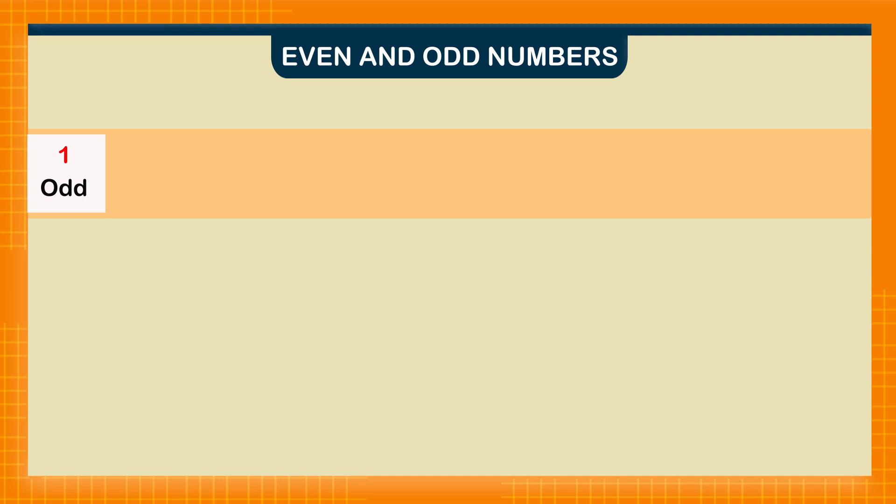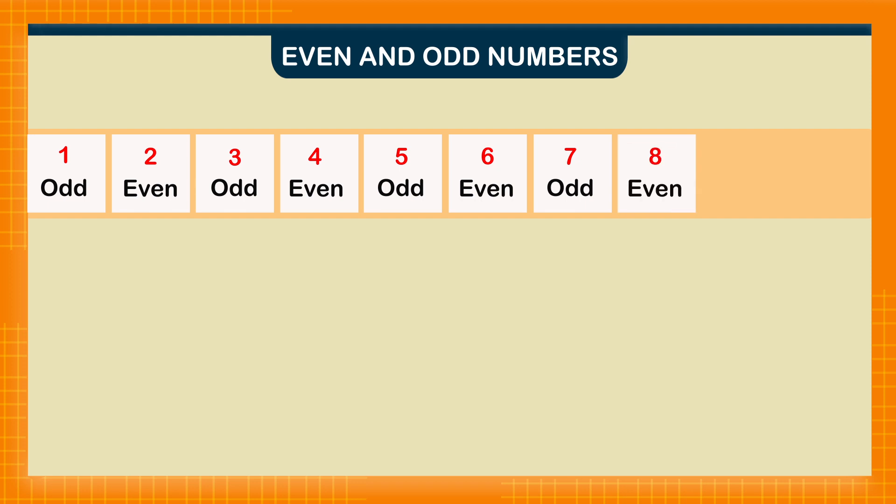One is an odd number. Two is an even number. Three is an odd number. Four is an even number. Five is an odd number. Six is an even number. Seven is an odd number. Eight is an even number. Nine is an odd number. Ten is an even number.